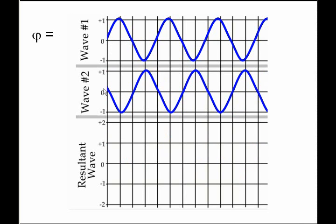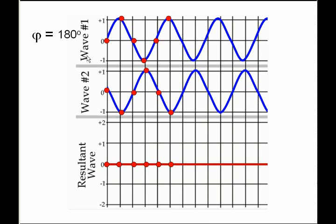In the next diagram, the first wave starts in the same spot but the second one starts at the 180 degree line — these are 180 degrees out of phase. Adding them up: zero plus zero equals zero; one plus negative one equals zero; zero plus zero equals zero; negative one plus one equals zero; zero plus zero equals zero; one plus negative one equals zero. The result is a flat line — they are completely canceling each other out because they are 180 degrees out of phase with each other.